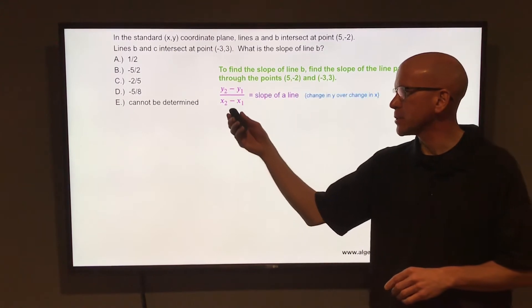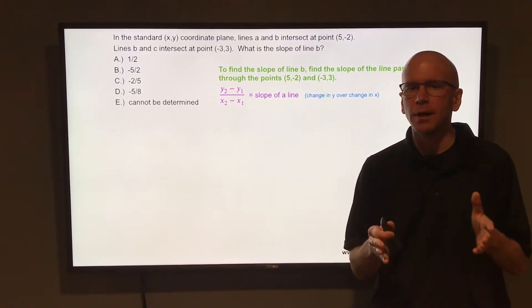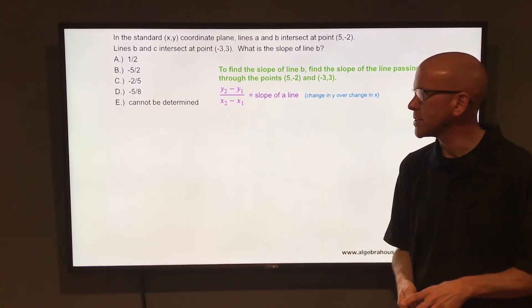To find the slope of a line, you can use the slope formula, y2 minus y1 over x2 minus x1, or just think change in y over change in x. Rise over run, vertical change over horizontal change.